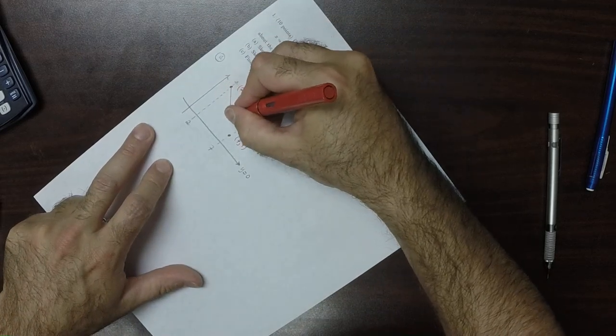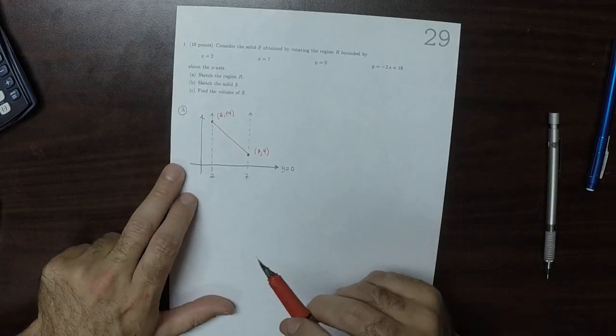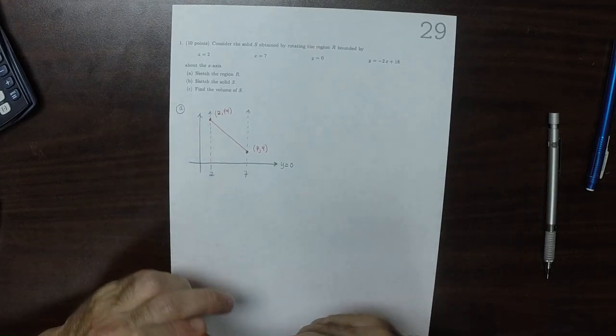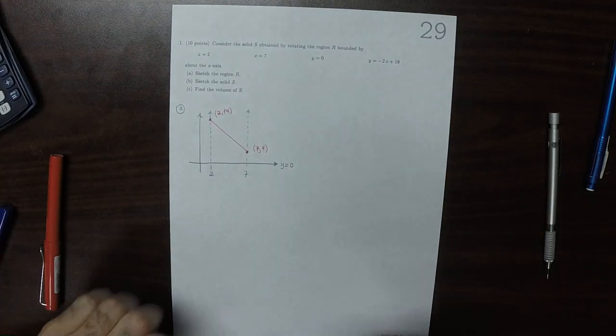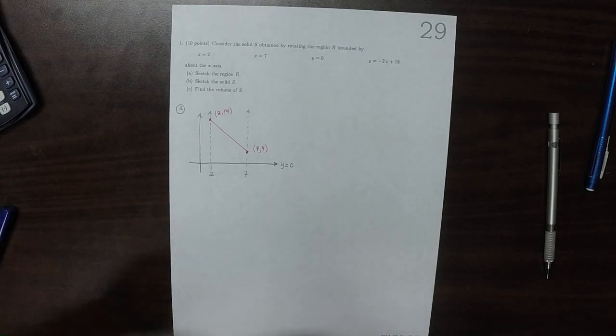And then it slopes down like this. So the region that's being rotated looks like this.